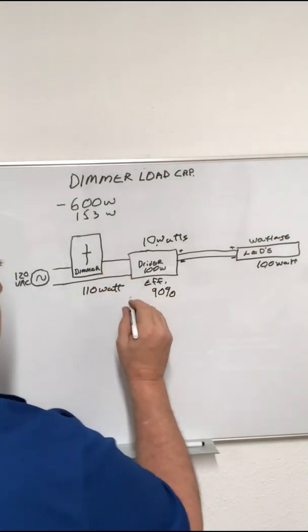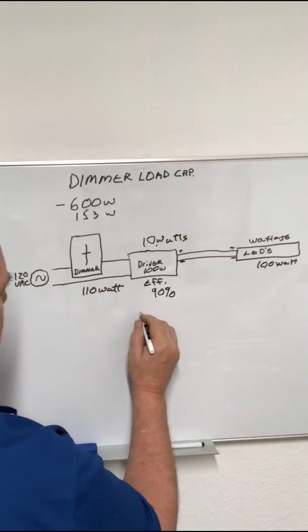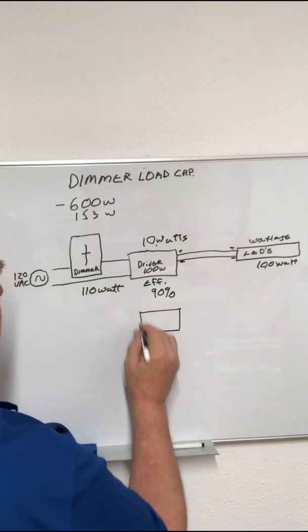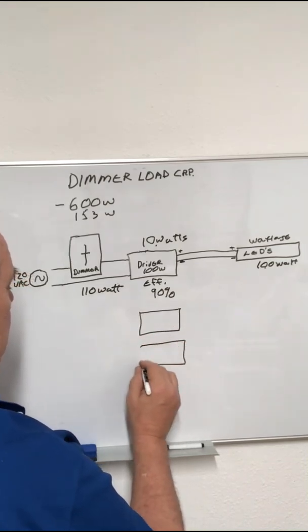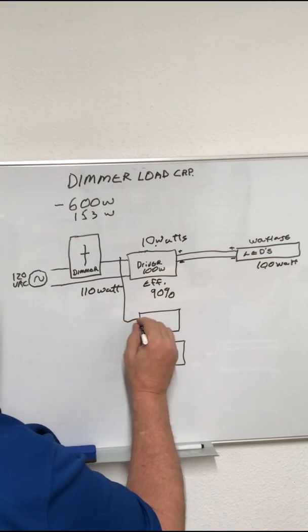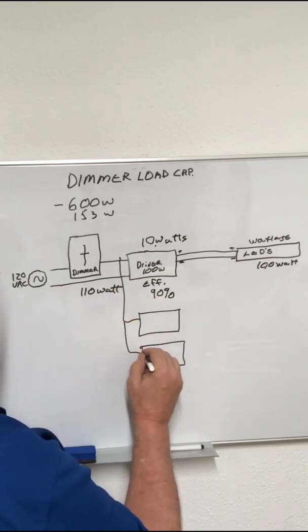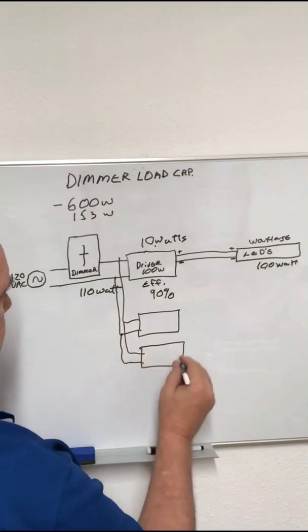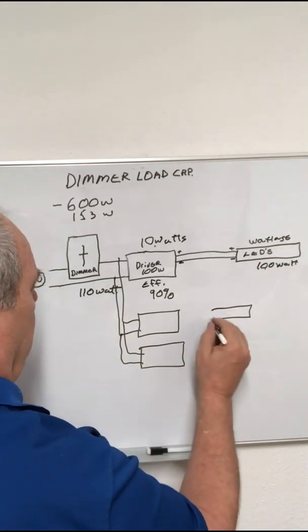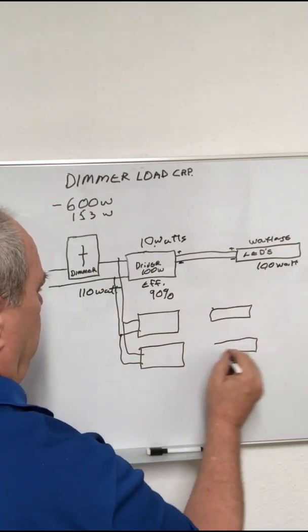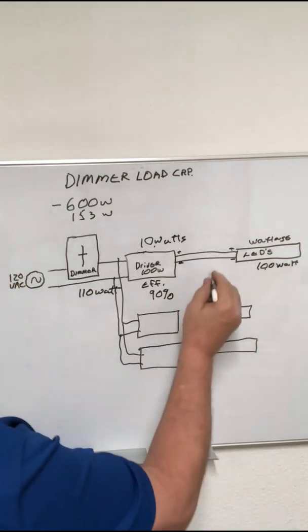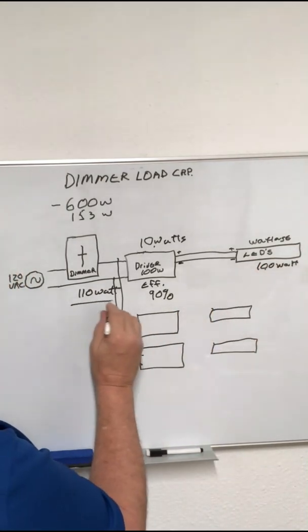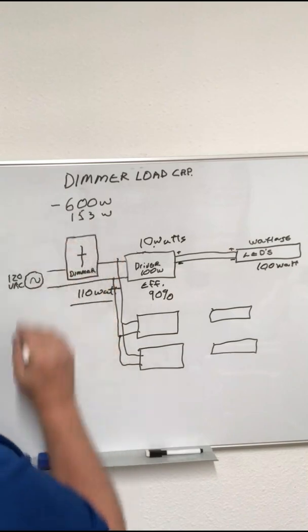But, what you have to take into consideration is if you have multiple drivers connected to the same dimmer. And then, you would have to do the calculation for each driver and load. And then, do the math, add it up, and then determine if you're still within the range.